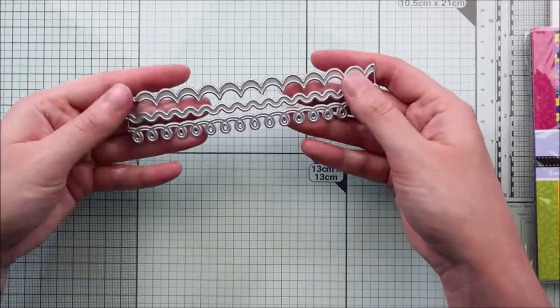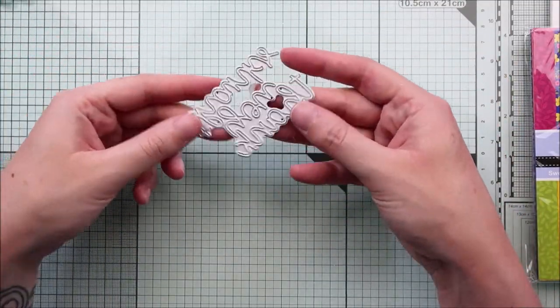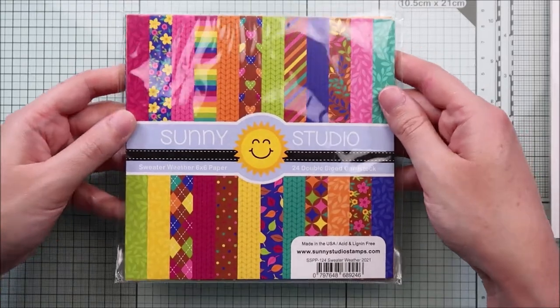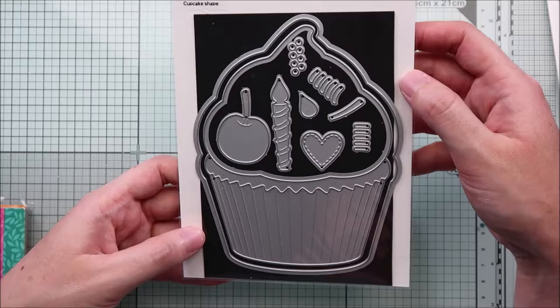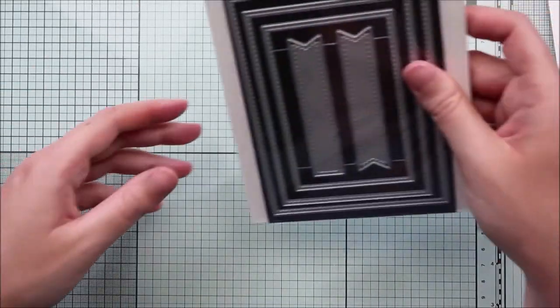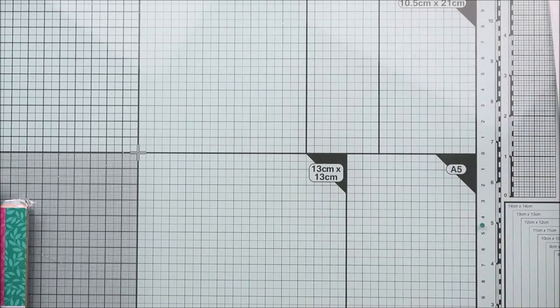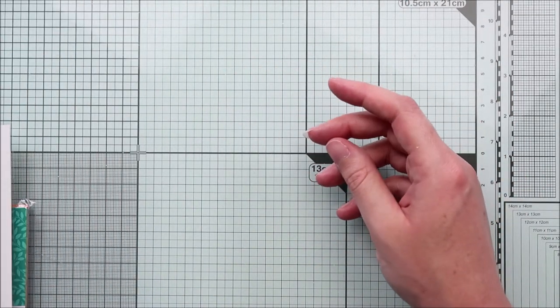On this card I use the new icing borders, as well as the new thank you words, some papers from the gorgeous new Sweater Weather 6x6 paper pack, the cupcake shape die set, a banner die from the stitched rectangles die set, and another banner die from the sliding window die set.